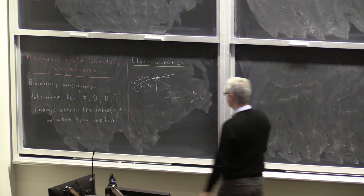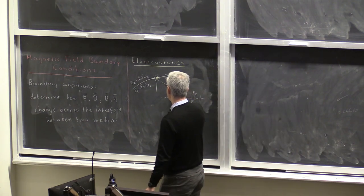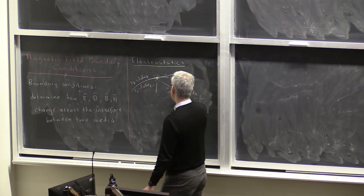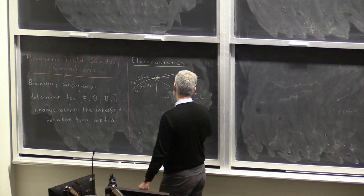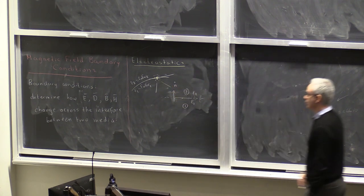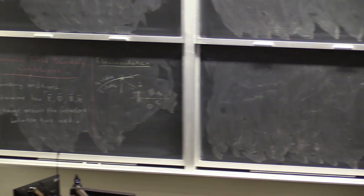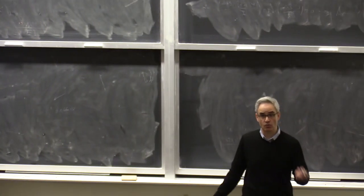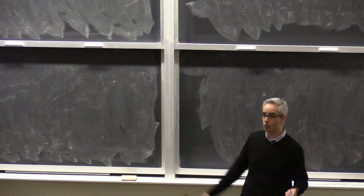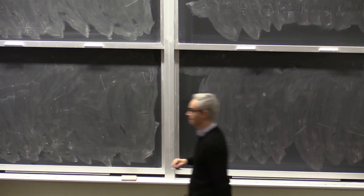I can define at this planar interface between epsilon 1 and epsilon 2, extending along the local tangent to the point of interest, a normal unit vector n-hat. Region 1 and region 2 are defined, and n-hat points from region 1 to region 2. Then we ask how the electric field changes from region 1 to region 2 right at the interface as we go through it.